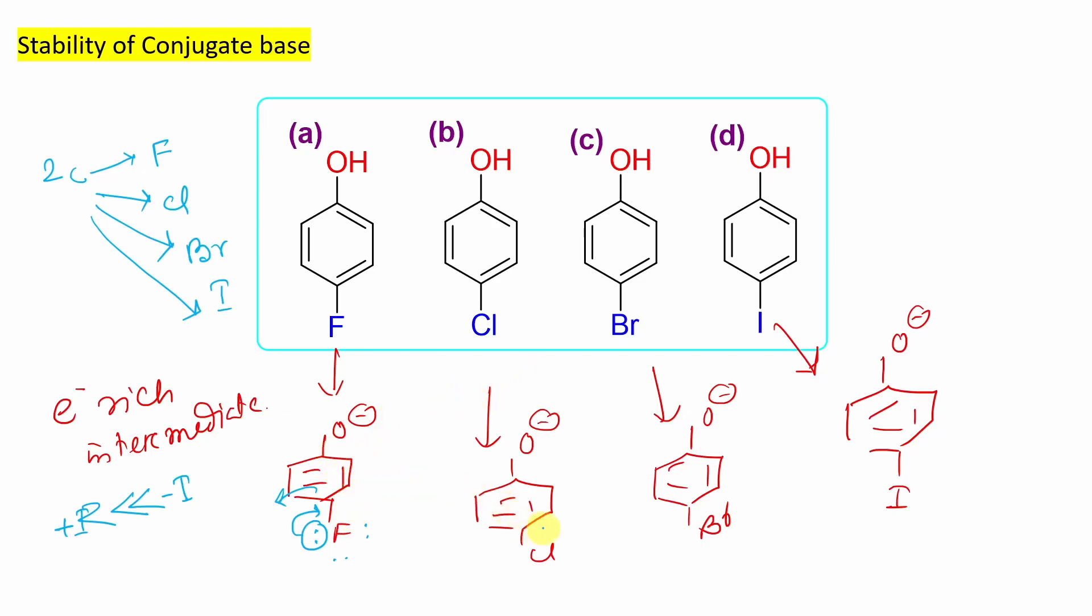Now next thing. So among this fluoro, chloro, bromo, iodine which one will be maximum stable? If you look at the electronegativity order: fluorine is greater than chlorine is greater than bromine is greater than iodine. But this electronegativity directly operates through the sigma bond. Since all are in para position or 4 position, this minus I effect is not that much dominant. However, there is another kind of effect. That is minus R.